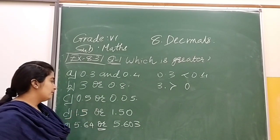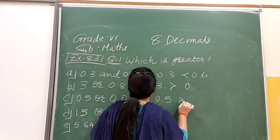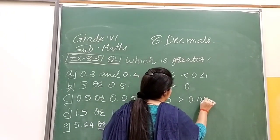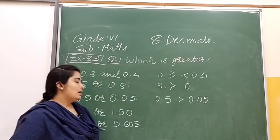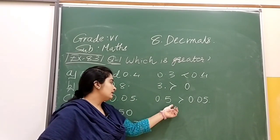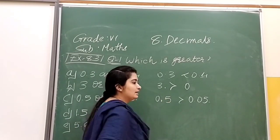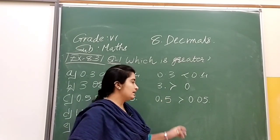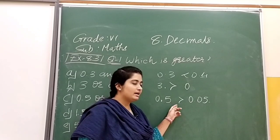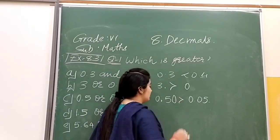Here 0.5 is given and 0.05 is given. We have discussed that in decimal numbers, if we put a zero before a number after the decimal point, its value will change. But if we put a zero after the 5, that doesn't matter. The value will remain the same.